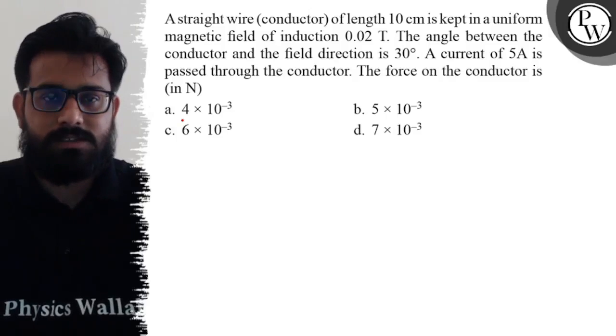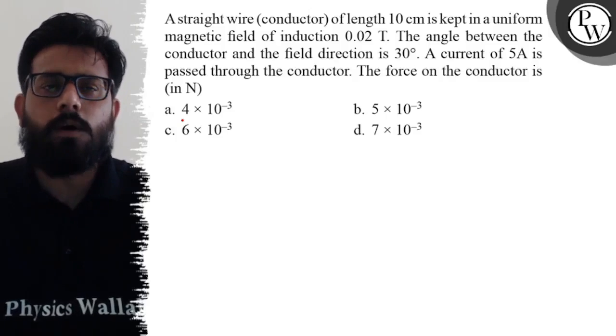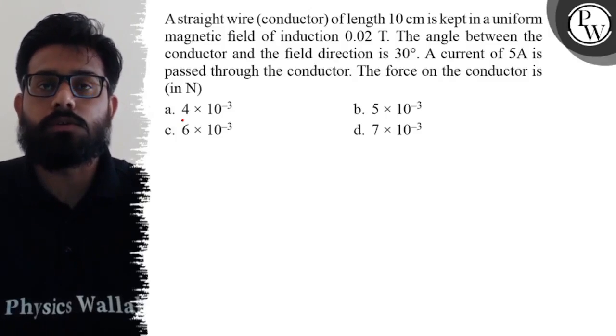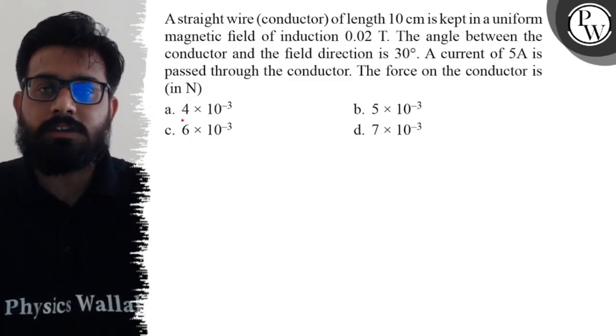Hello bachos, so let's see the question. A straight wire of length 10 centimeter is kept in a uniform magnetic field of induction 0.02 Tesla. The angle between the conductor and the field direction is 30 degrees. A current of 5 ampere is passed through the conductor.